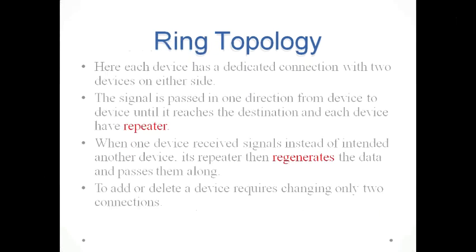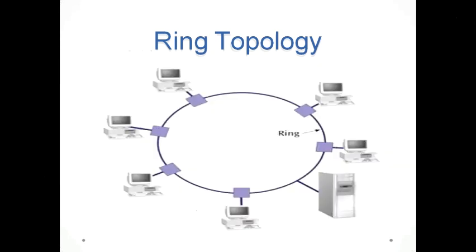In ring topology, each device has a dedicated connection with two devices on either side. The signal is passed in one direction from device to device until it reaches the destination, and each device has a repeater. When one device receives a signal intended for another device, its repeater regenerates the data and passes it along. To add or delete a device requires changes to only two connections. This is the picture of ring topology.